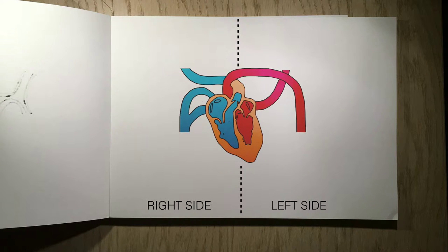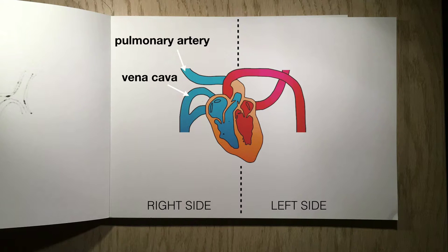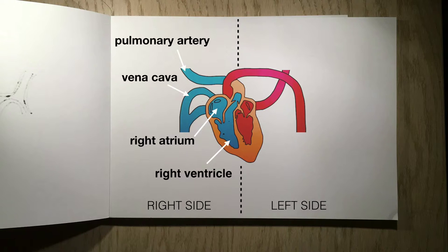The right-hand side of the heart is on the left-hand side of the page and is connected by the pulmonary artery, the vena cava, and comprises of the right atrium and the right ventricle. The left-hand side of the heart is more muscular, because it has to pump to the rest of the body.